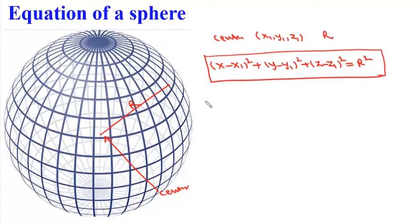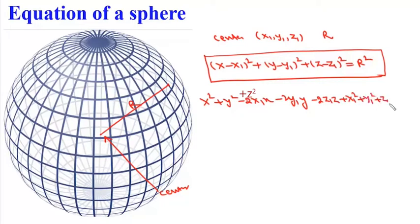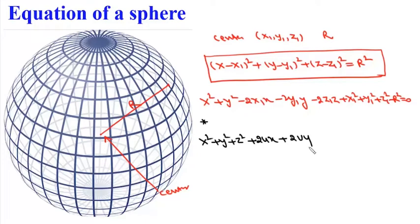If we expand this equation, we get: x² + y² + z² − 2x1·x − 2y1·y − 2z1·z + x1² + y1² + z1² − r² = 0. From here we can write the general equation of a sphere as: x² + y² + z² + 2ux + 2vy + 2wz + c = 0.